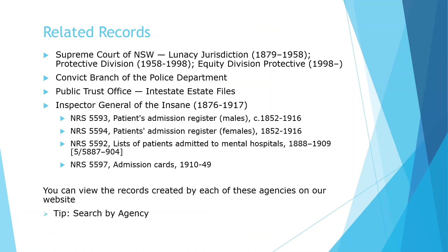Other related records include those from the Supreme Court Lunacy and later Equity Jurisdiction, the Convict Branch of the Police Department, the Public Trustee Office, and from the Inspector General of the Insane. The records from the Inspector General of the Insane include general registers of patients admitted to various mental hospitals in the state, arranged alphabetically by surname then chronologically by date of admission, with details including name, hospital, date of admission, date of death, and remarks. The series NRS 5592 duplicates to some extent the registers of admissions and discharges but contains far less information. The series of admission cards concerns patients admitted to the Darlinghurst Reception Centre and the Newcastle and Orange reception houses.